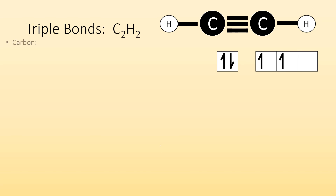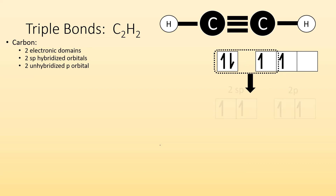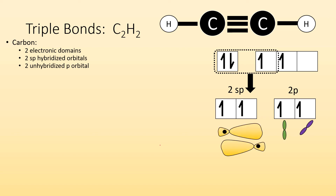So if we take a look at triple bonds — this carbon has two electron domains, which means it has to be sp hybridized. So that's going to leave two unhybridized p orbitals. We take one of the s's and one of the p's, and we end up with two sp orbitals, but also two unhybridized p orbitals. They're still peanut-shaped — not looking like hybrid orbitals.